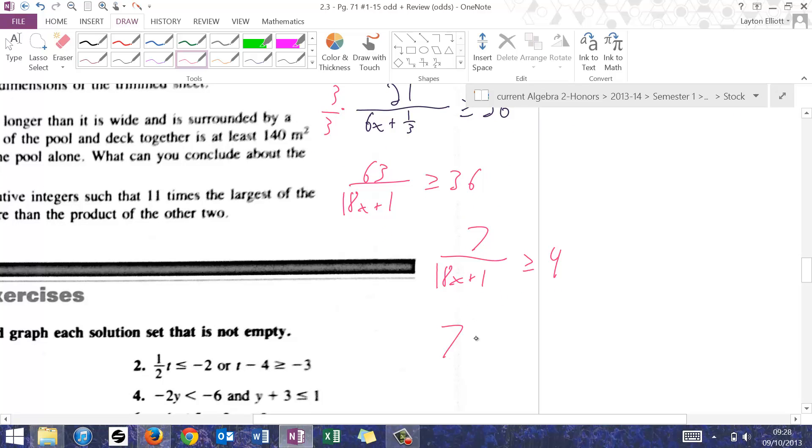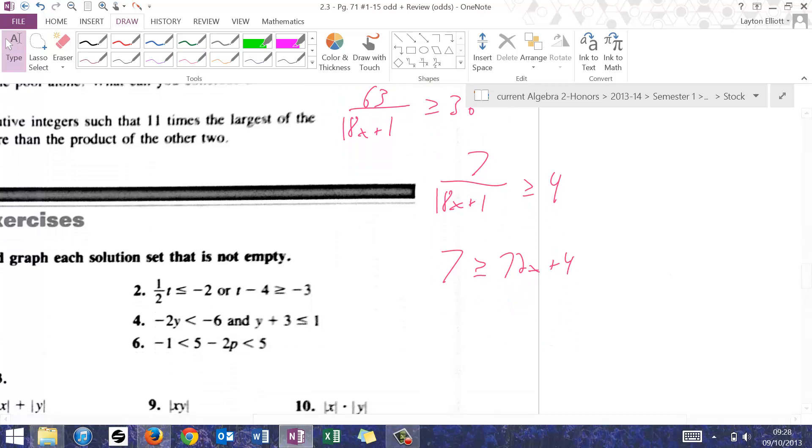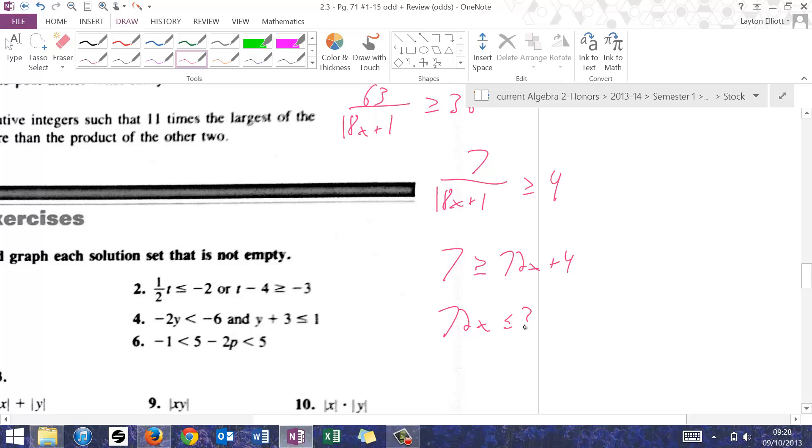I just divided both sides by 9. Let's do a cross product. You get 7 is greater than or equal to 72x plus 4. So 72x is—sorry, less than or equal to 3, switching that around. And x is less than or equal to 3 over 72, which is 1 over 24.